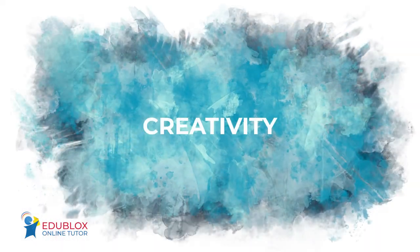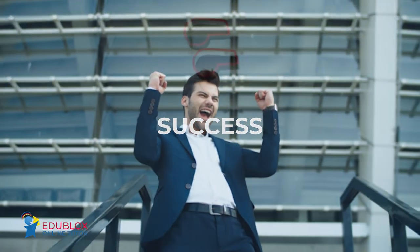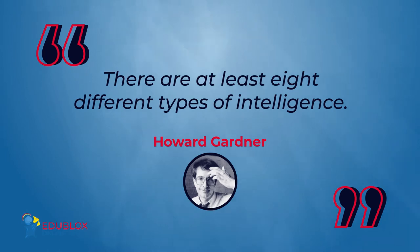Many scholars, however, doubt that there is such a thing as general intelligence and that intelligence includes such attributes as creativity, persistent curiosity, and success. Howard Gardner suggests that there are at least eight different types of intelligence.